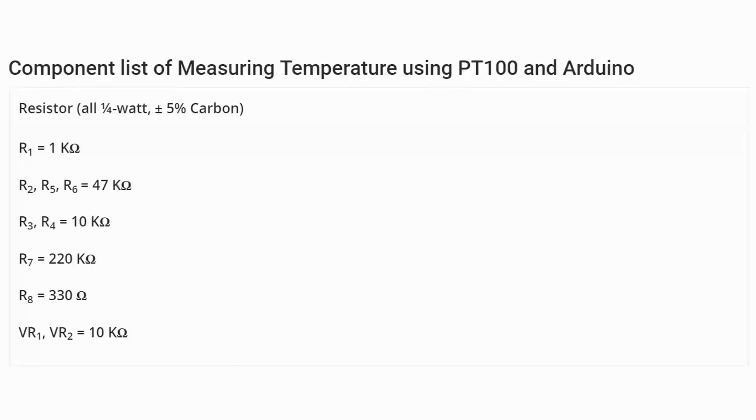Let's see the component list for measuring temperature using PT100 and Arduino. Each resistor used here is 1/4W carbon composition plus minus 5% tolerance. R1 equals 1 kilo-ohm, R2, R5 and R6 equal 47 kilo-ohm, R3 and R4 equal 10 kilo-ohm, R7 equals 220 kilo-ohm, R8 equals 330 ohm, and two variable resistors each of 10 kilo-ohm.